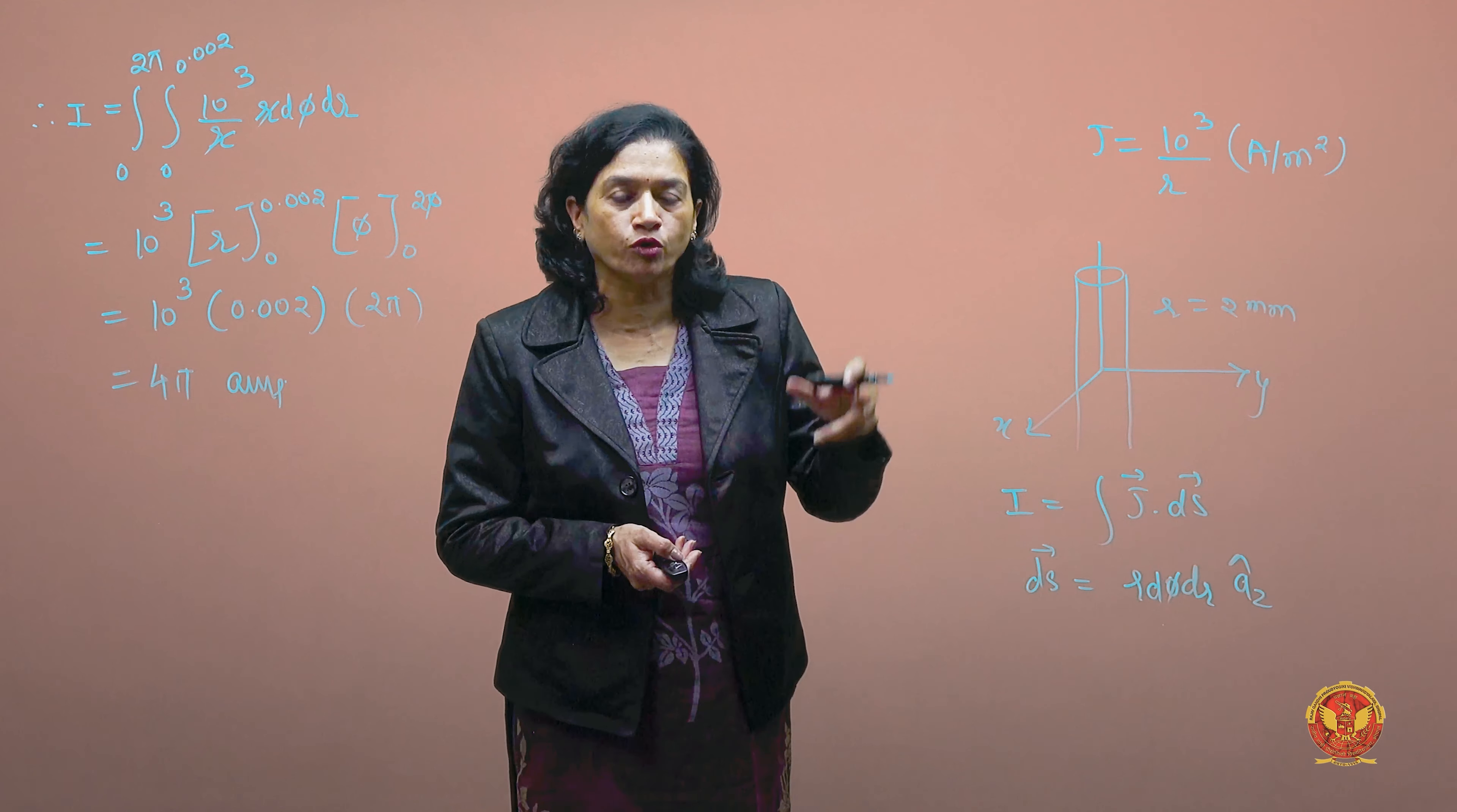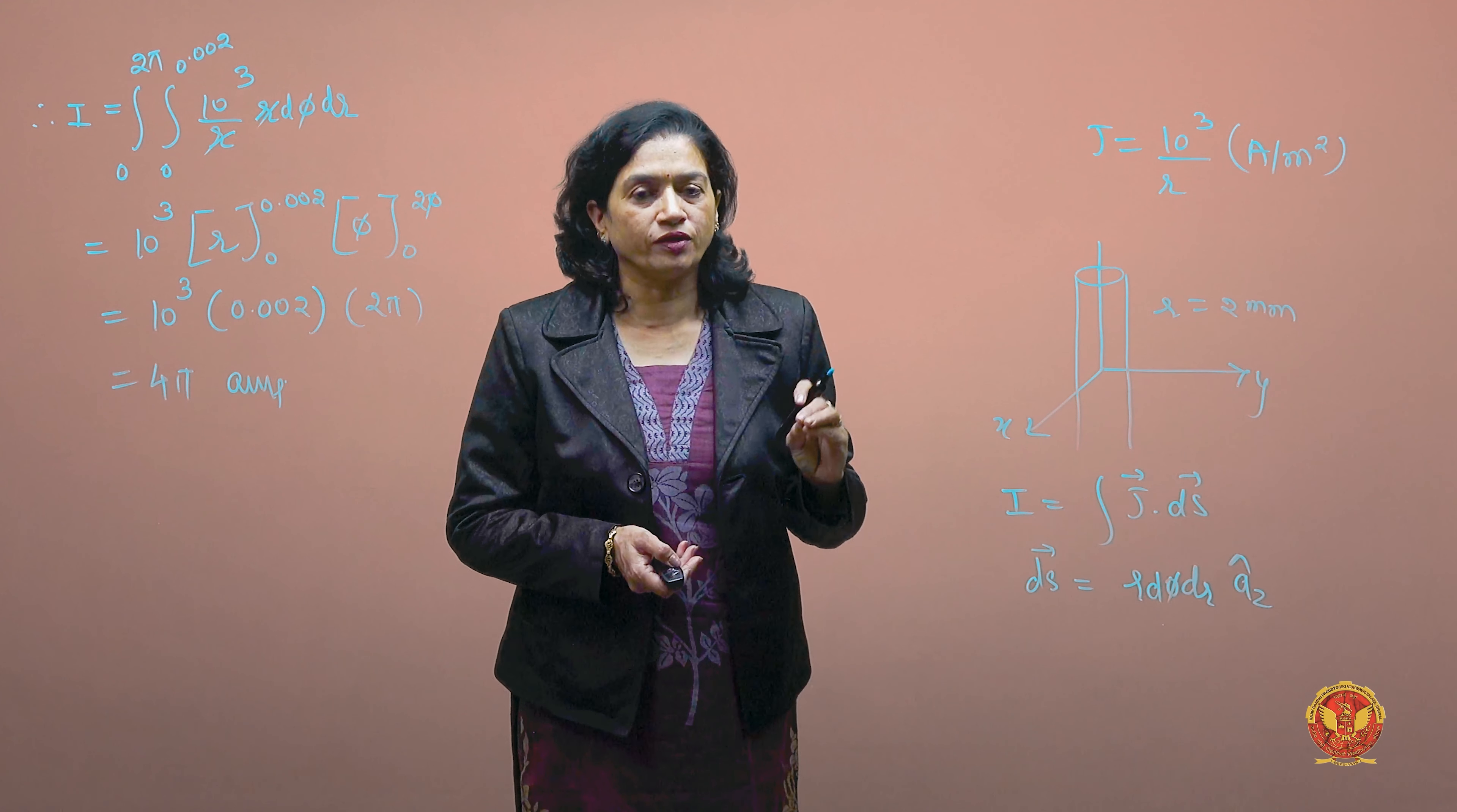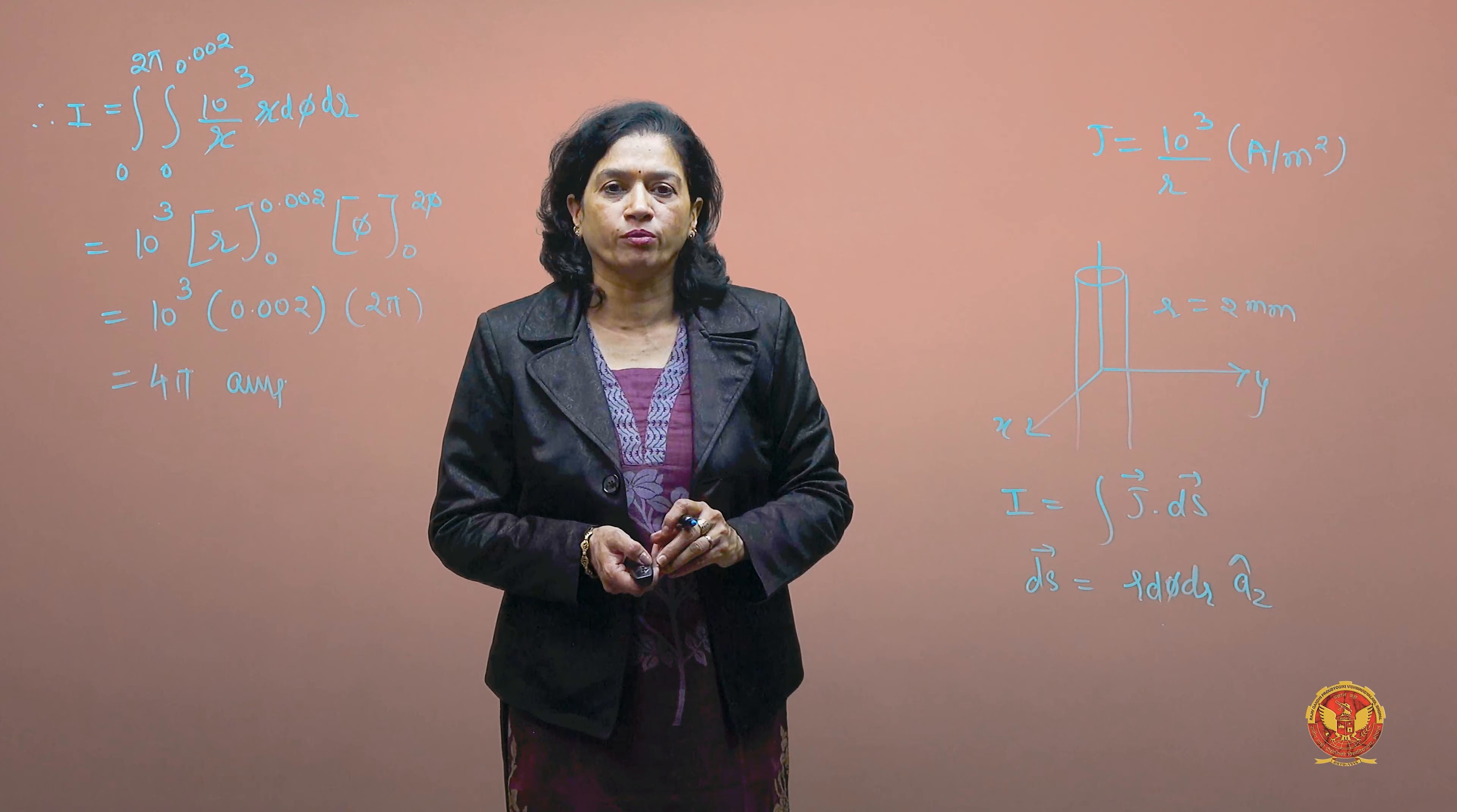We denote the radius as r. If you see r, you should understand this is not a spherical coordinate system problem but a cylindrical coordinate system problem. We specify r and its value is 2 mm.